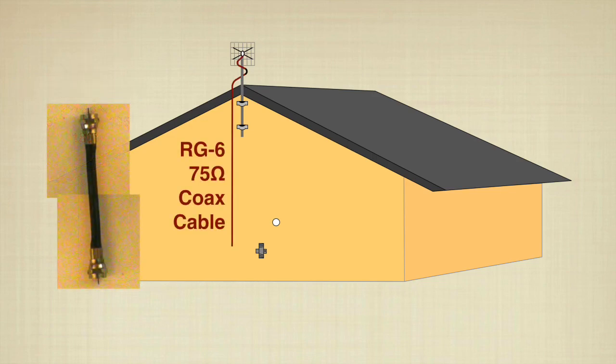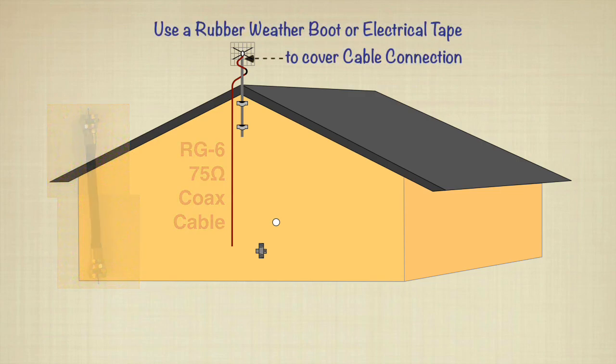Then connect RG6 coax cable to the antenna connector. Many antennas come with a rubber boot to protect the coax to antenna connection from weather. Secure the boot to the connection. If you don't have a boot, electrical tape will work.